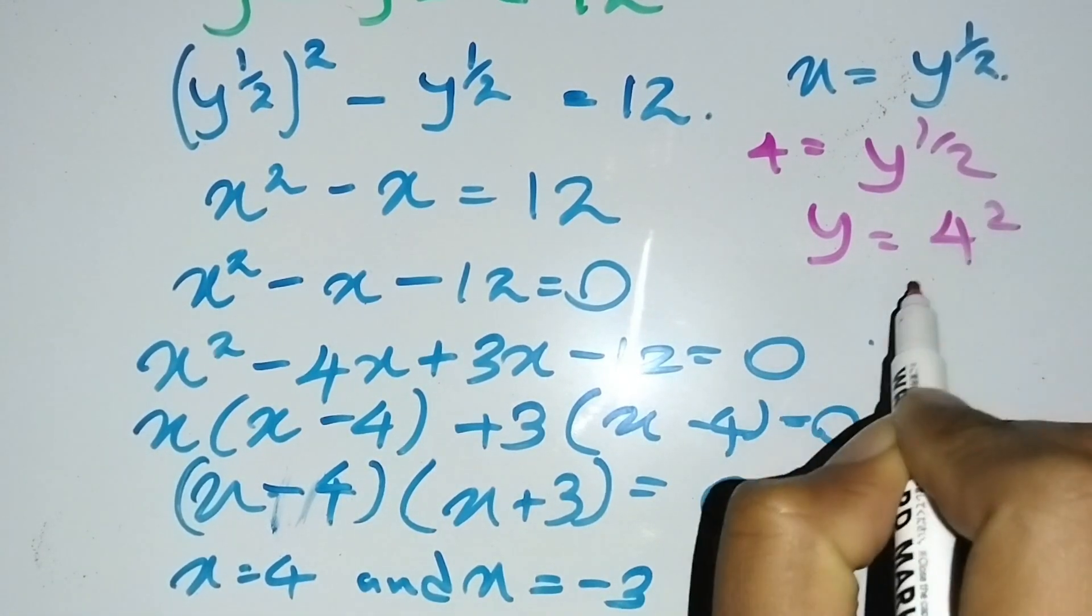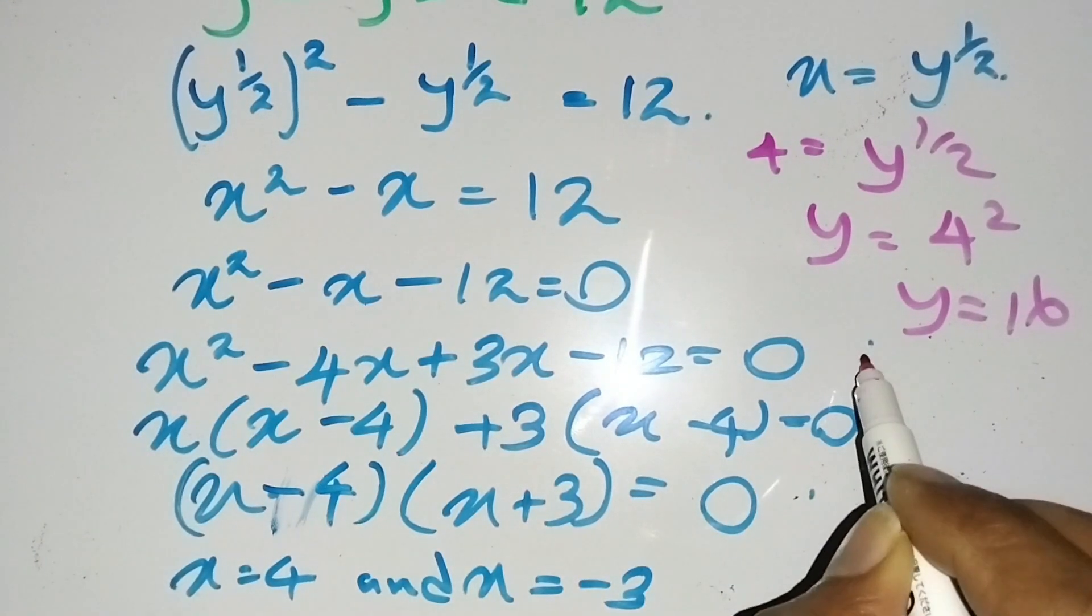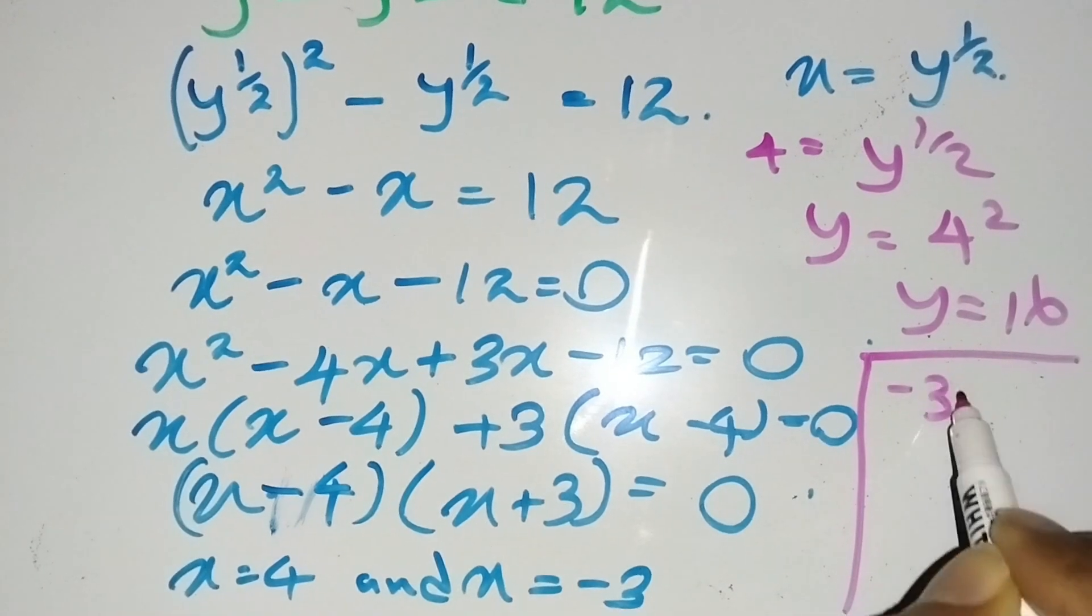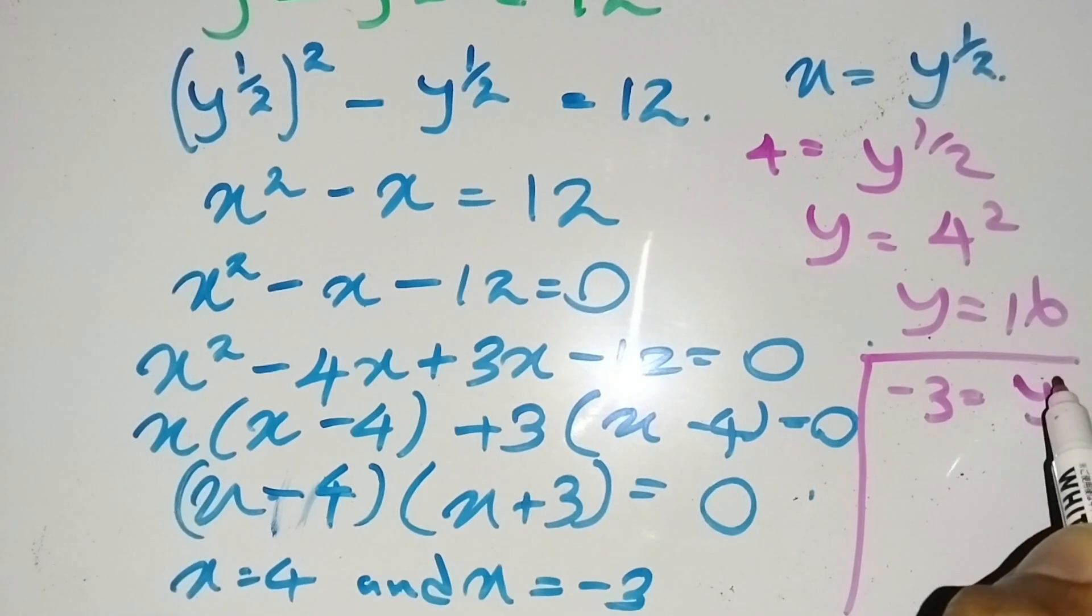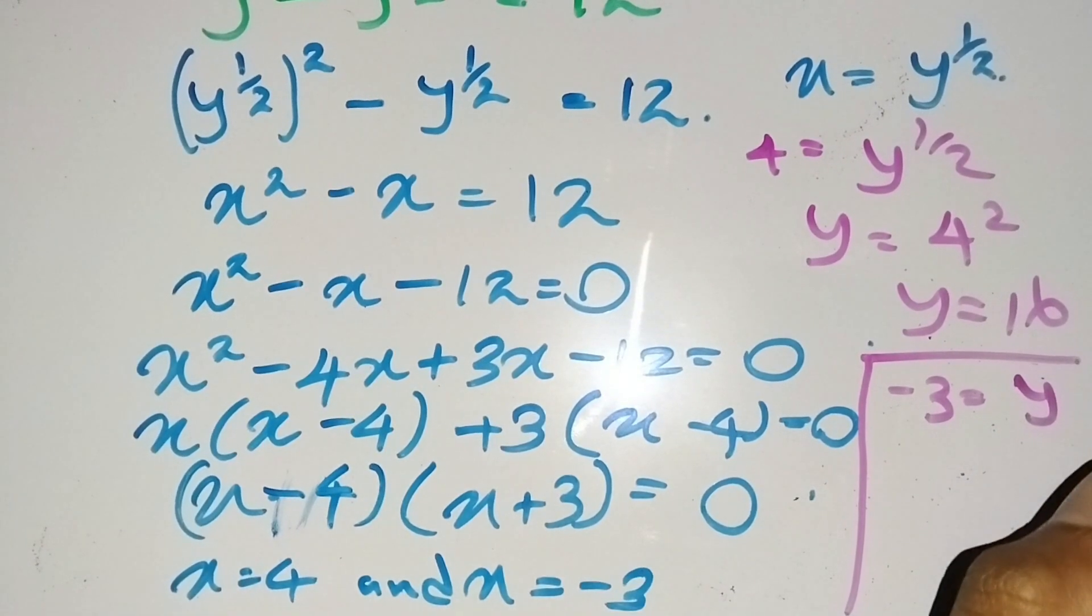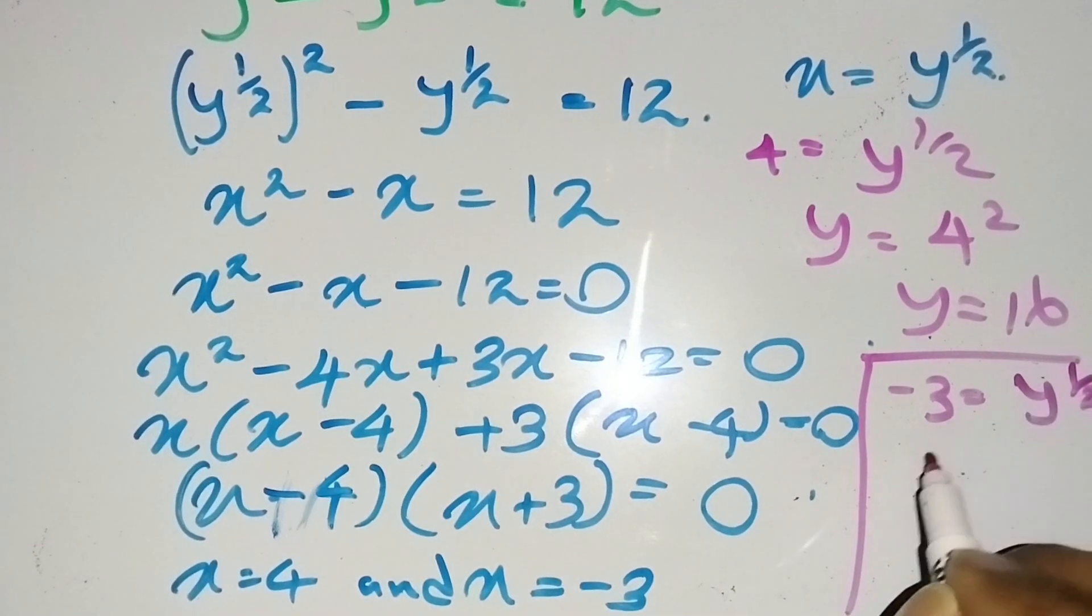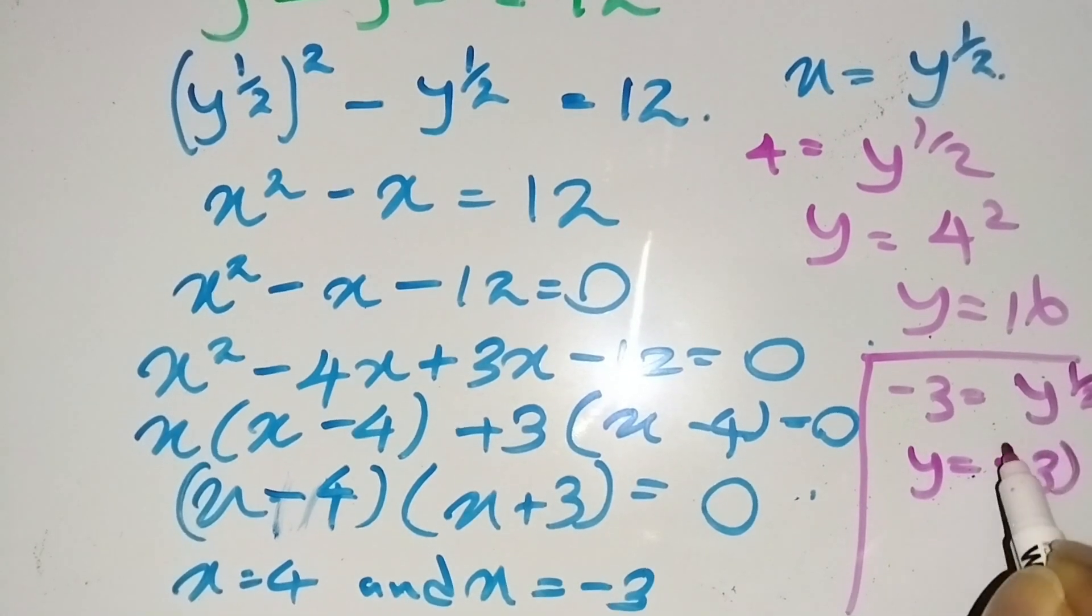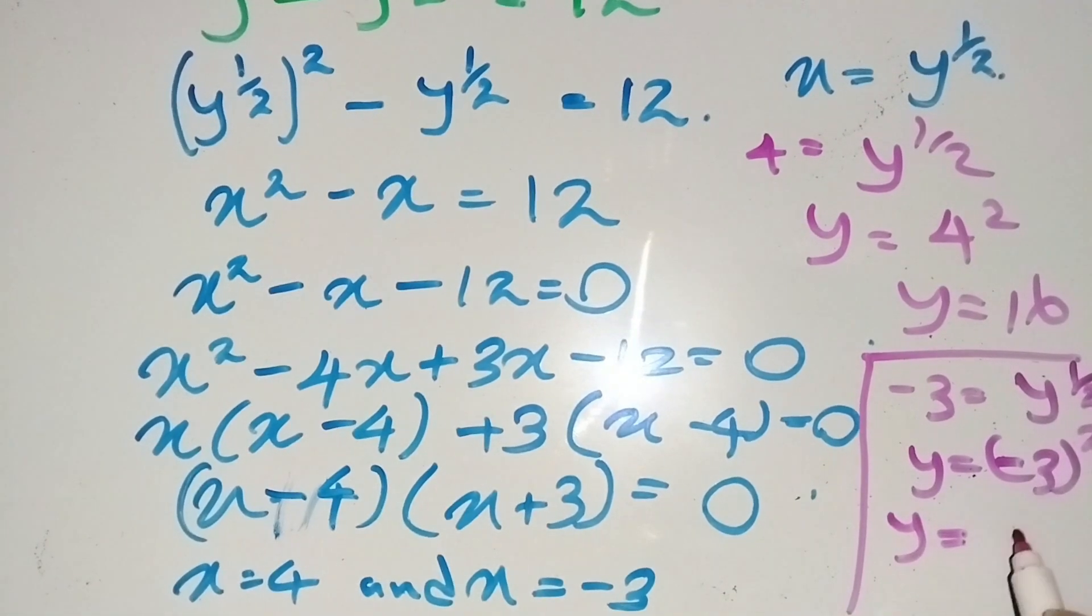Also I can substitute this -3 into this expression. Then that becomes -3 = y^(1/2), and y becomes (-3)^2, so y = 9.